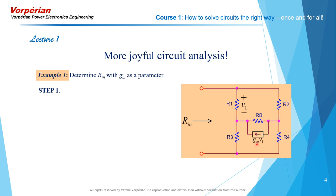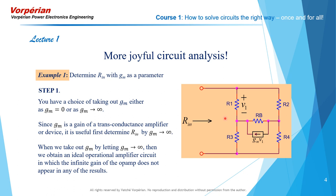You can set the gain of a dependent source either equal to zero or infinity. When you set the gain of the dependent source to infinity, then the whole circuit reduces to that of an ideal cookbook op-amp circuit. And this is what it would look like.